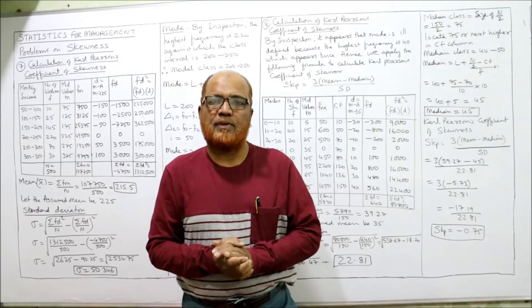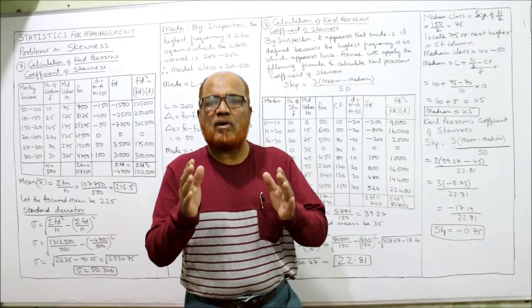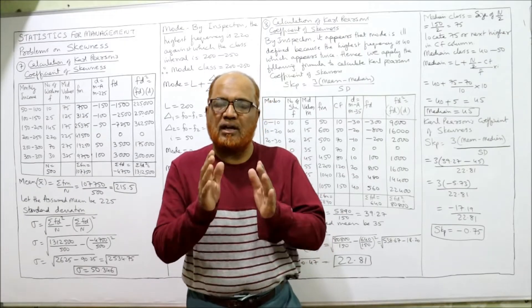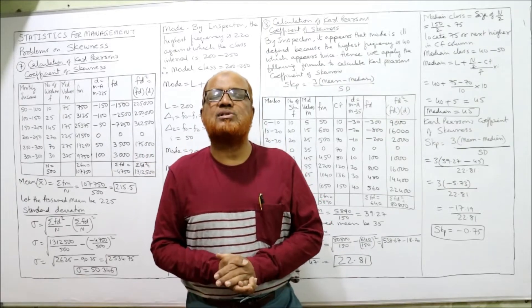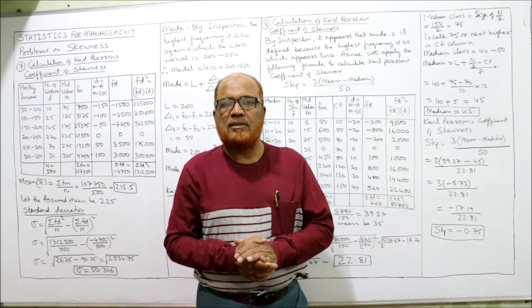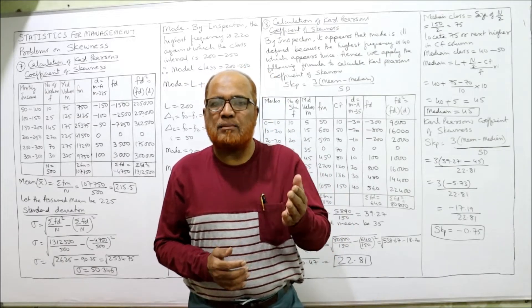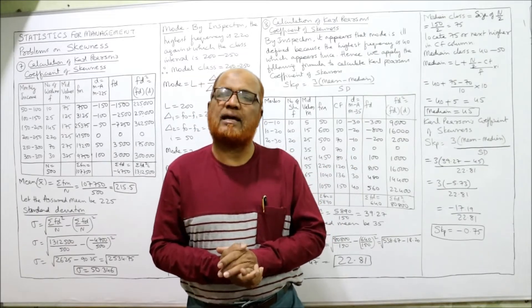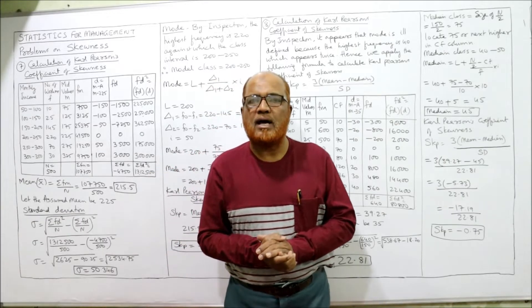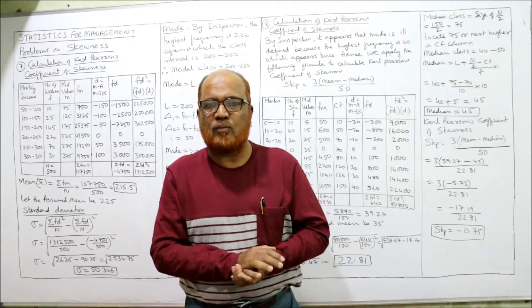Skewness shows how the values are distributed around the mean — whether the distribution is symmetrical or asymmetrical. Symmetrical means equal number of items are lying above and below the middle value. When it is symmetrical, the distribution is a bell-shaped curve. Asymmetrical means items are not equally spread above and below, making it skewed.